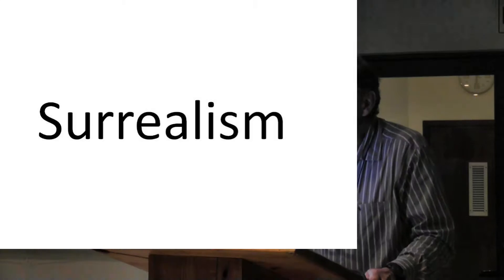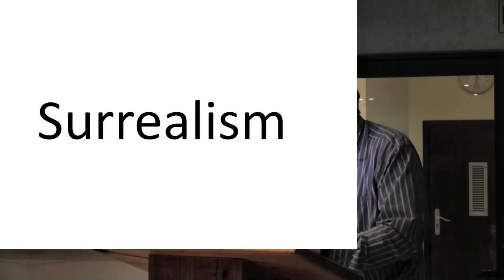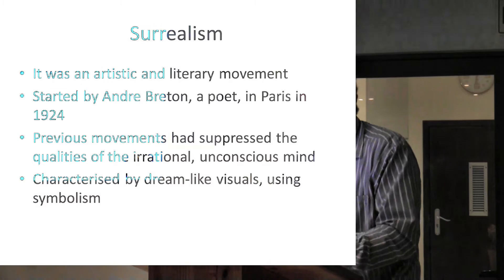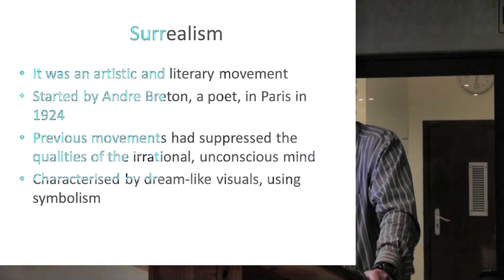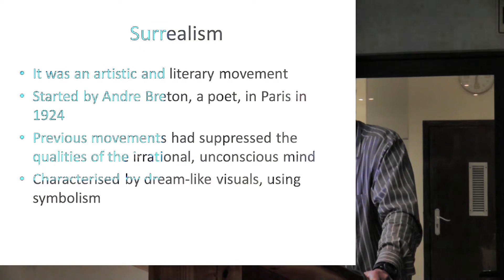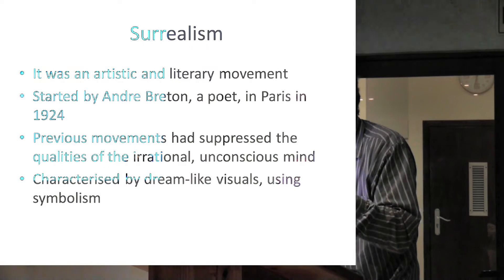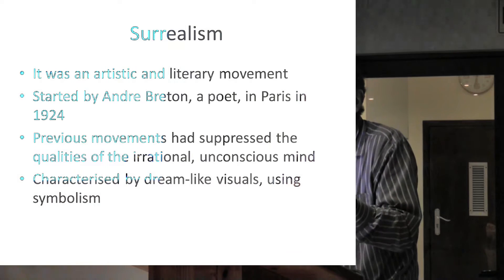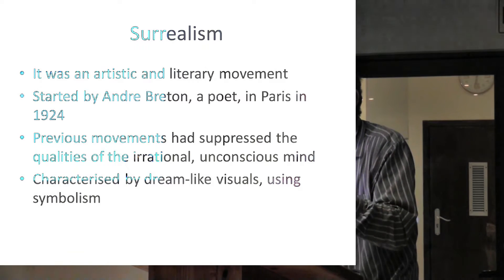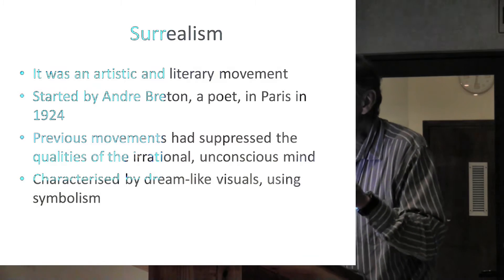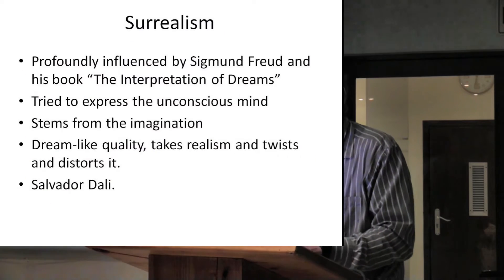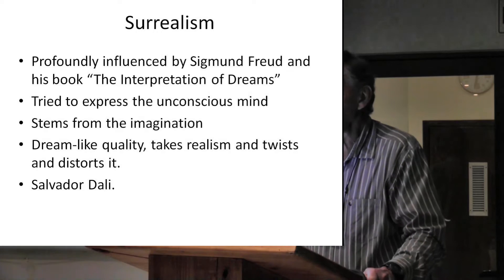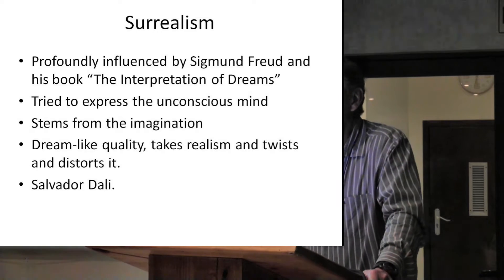Then you had Surrealism. This was an artistic and literary movement started by André Breton, a poet, in Paris in 1924. Previous movements had suppressed the qualities of the irrational, unconscious mind. Surrealism worked with the irrational, unconscious mind. It was characterised by dreamlike visuals using symbolism, and was profoundly influenced by Sigmund Freud, who wrote The Interpretation of Dreams.